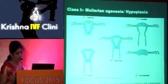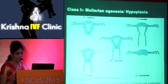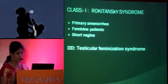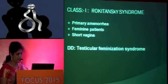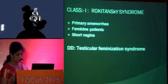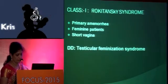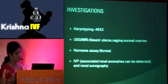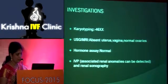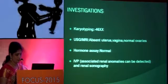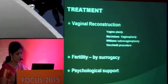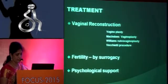Class 1 is Mullerian agenesis and hypoplasia — there is absence of uterus and vagina. It may be partial or complete; the complete variety is the most common. The example is Rokitansky syndrome, in which the woman presents with primary amenorrhea and on examination has normal secondary sexual characters, normal growth, normal external genitalia, and a short vagina. It should be differentiated from testicular feminization syndrome. Karyotyping shows 46XX female karyotype; ultrasound and MRI show absent uterus and vagina with normal ovaries; hormonal assay will be normal. Intravenous pyelogram and renal sonography are needed to rule out renal anomalies. Treatment is by vaginal reconstruction, either non-surgical or surgical vaginal dilation, and fertility is achieved by surrogacy, with psychological support.